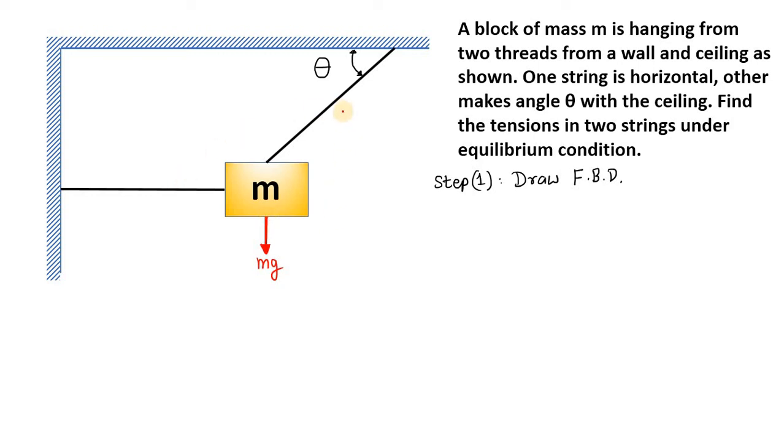Now, what about these two strings? These strings will become tight. Let us say the tension in this string becomes T1 and tension in this horizontal string becomes T2.